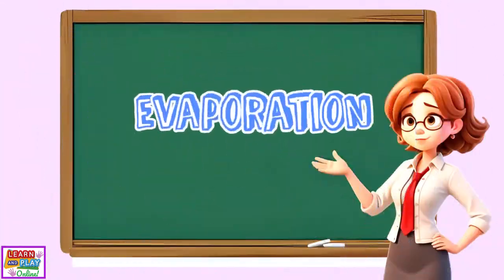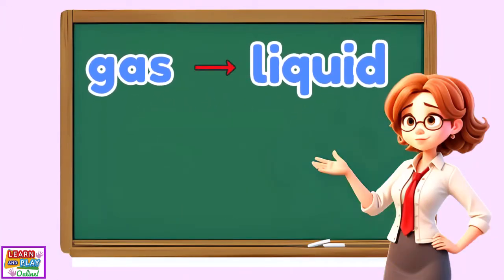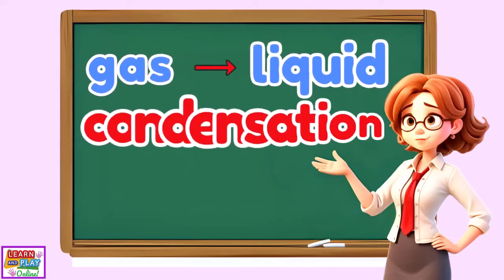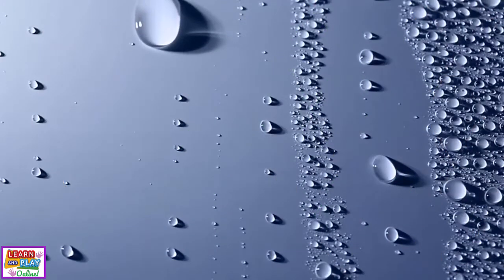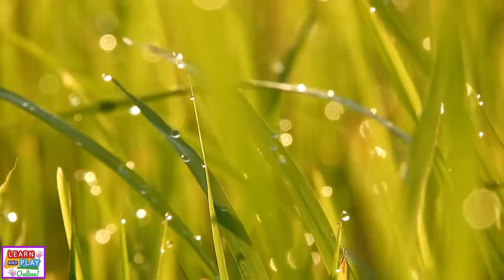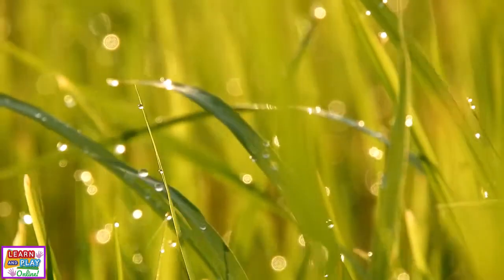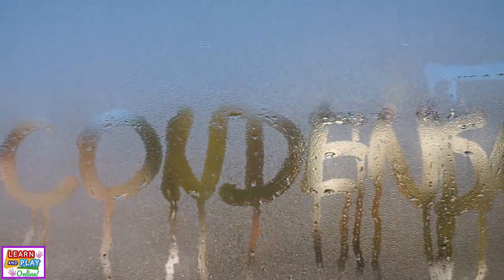So we've just gone through evaporation, but what is the process called when gas matter turns into liquid matter? When that happens, it is known as condensation. Condensation is when water vapor turns back into a liquid state. This occurs when the vapor in the air is cooled and the particles begin to slow down. Have you ever seen dew on grass early in the mornings? Or water droplets forming on the outside of your cold drink? Or noticed water droplets on the inside of windows? They are all examples of condensation, where gas matter turns into liquid matter.